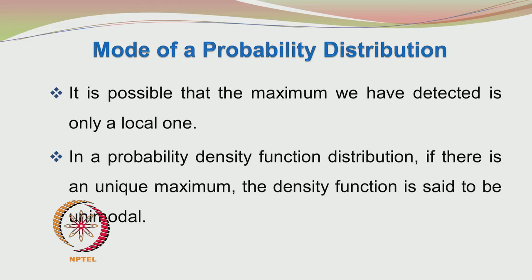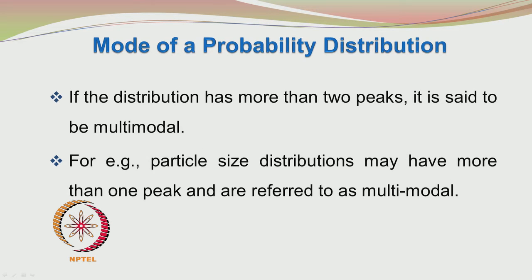Depending on where we start the analysis, the maximum detected may be only a local maximum; the distribution may have several peaks and we may have identified only one. In a probability density distribution, if there is a unique maximum, the density function is said to be unimodal. If the distribution has more than two peaks, it is said to be multimodal; with two peaks it is referred to as bimodal. One example where you may encounter multiple modes is in particle size distribution diagrams, where the first peak may correspond to fines and the second to coarser particles.